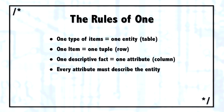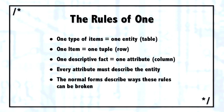And then every one of those columns should actually describe that specific entity, not some other entity. If you follow these three rules of one—one type of item, one entity; one item, one tuple; one fact, one attribute—you will always be normalized.